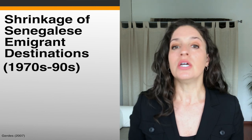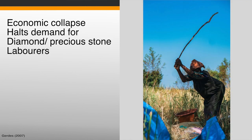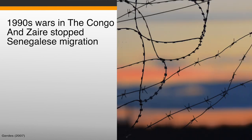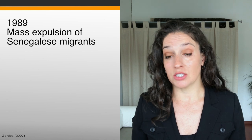There was a shrinking of Senegalese emigrant destinations in Africa between the 1970s and 1990s. In Central African countries, late in the 1970s an economic collapse halted demand for diamond and precious stone laborers. In the 1990s, wars in the Congo and Zaire effectively stopped Senegalese migration to the region. In 1989, there was a mass expulsion of Senegalese migrants from Mauritania. In the Ivory Coast and Gabon, a rise of xenophobia in the early 1990s and 2000s incited mass returns of migrants to Senegal, and the 2002 Ivorian civil war directed violence towards Senegalese migrants.